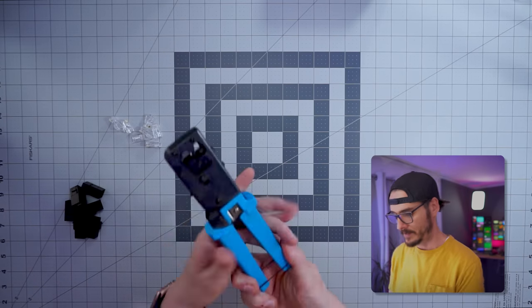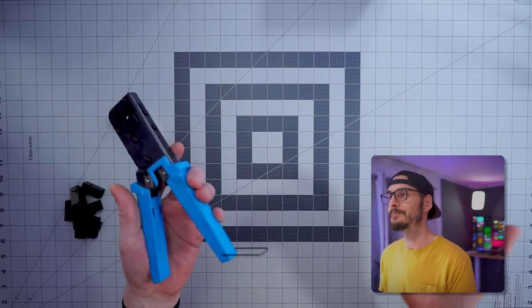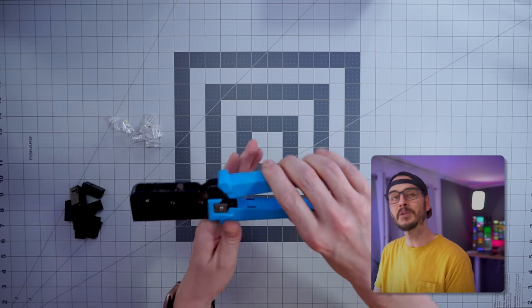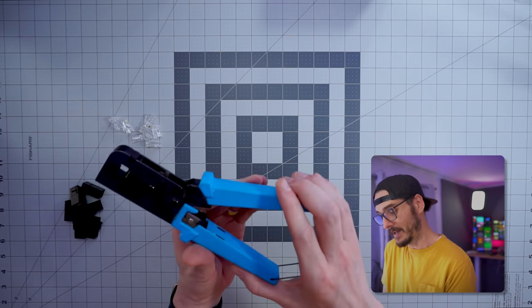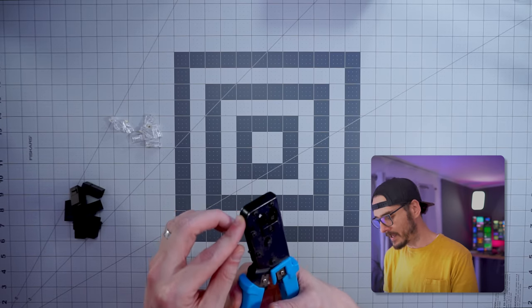And that, too, takes something specialized, like this crimper. I've had this crimper for about 10 years, and it's held up. Now, I know this probably isn't the most high-quality one, but it has held up for many, many years. And this crimper can crimp both 8P and 6P.